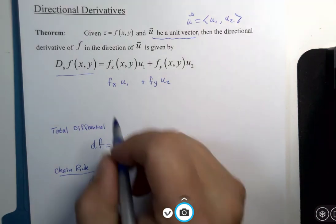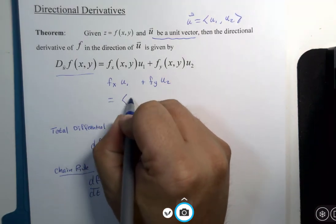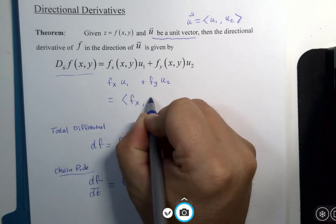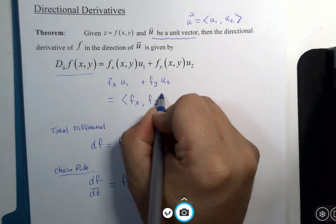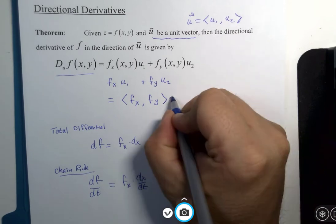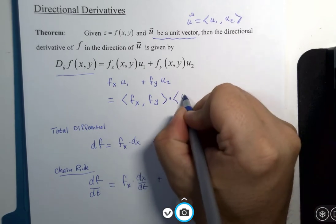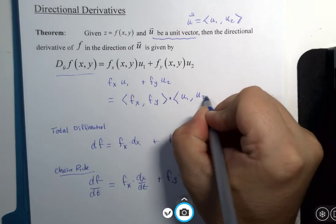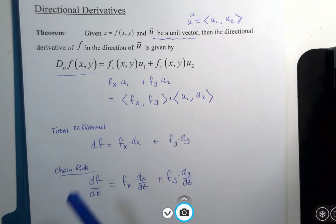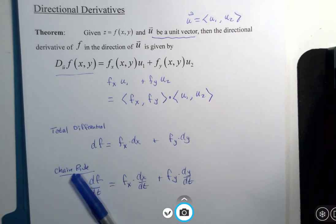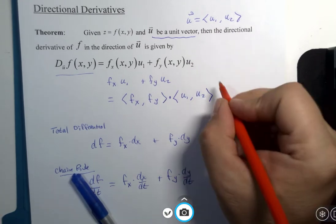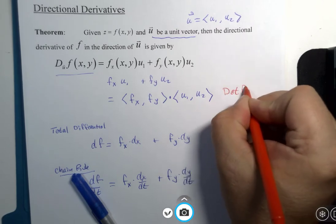There's another way to write this. This is the dot product of two vectors. Dot product.